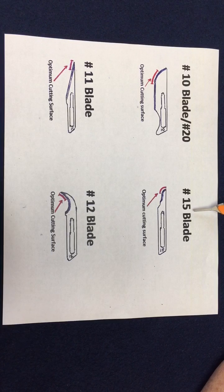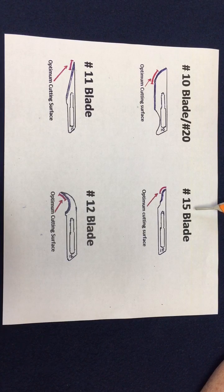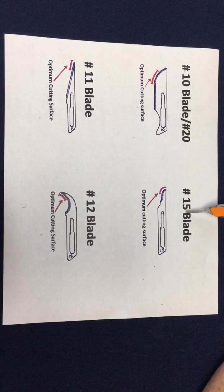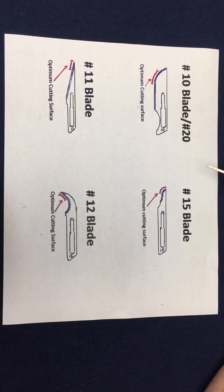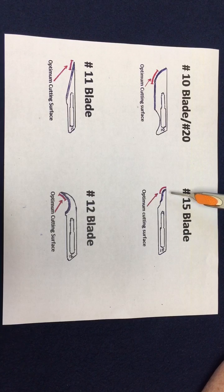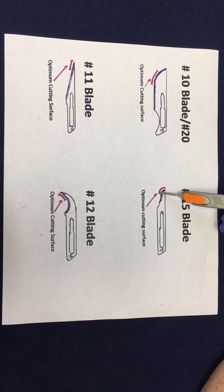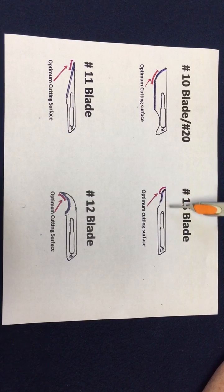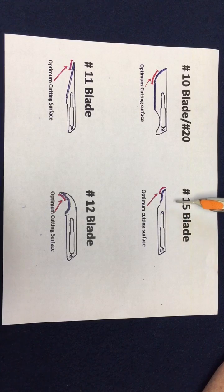Then you have the 15 blade, which is used for smaller incisions like biopsy sites, hands, feet, and trocar incisions. The optimal edge to cut on a 15 blade is at the tip of the blade — that's what you're going to use.